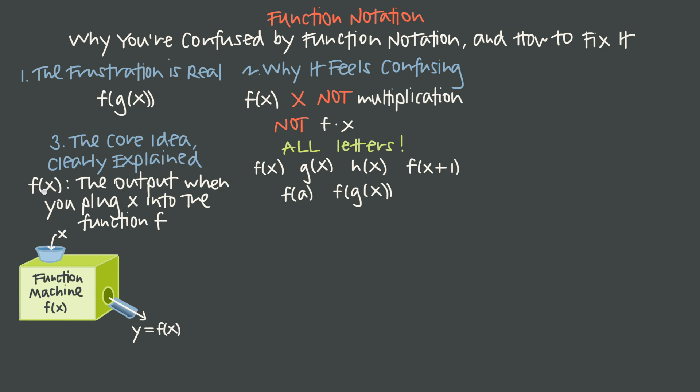The other way to think about this is as inputs and outputs. x is the input, f of x is the output, or x is the input, y is the output. Every time we put in an x, we're going to get out an f of x. And those things are always going to be pairs.